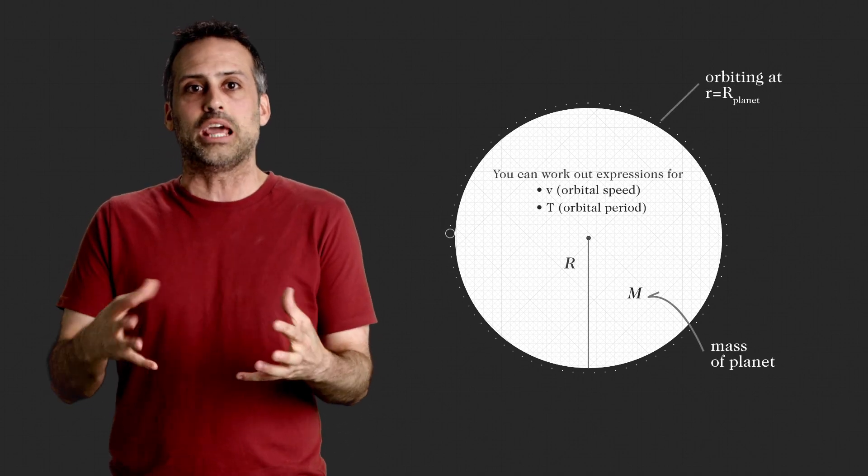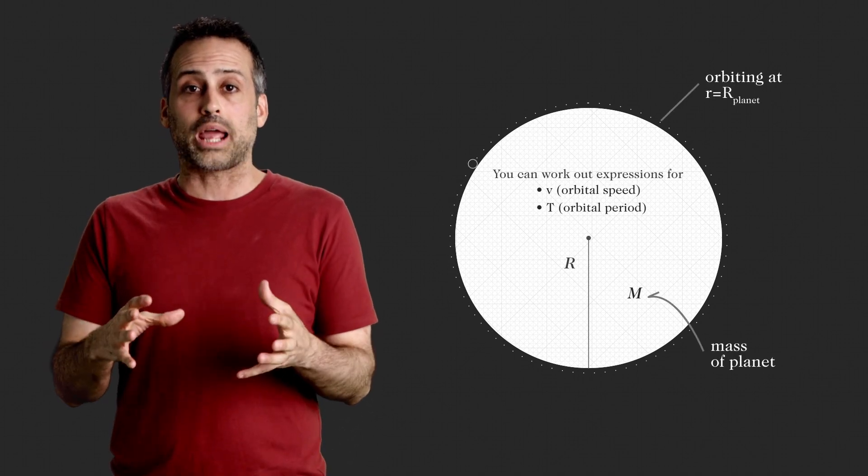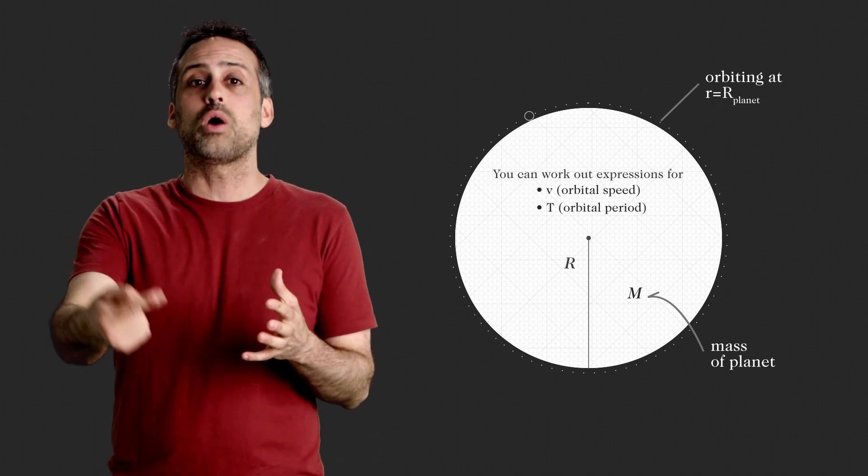Anyway, in Newtonian gravity, you can work out an expression for the orbital speed of this particle in terms of the mass and radius of the planet, or in terms of the density and radius of the planet. You can also work out how much time it would take to go halfway around the globe.